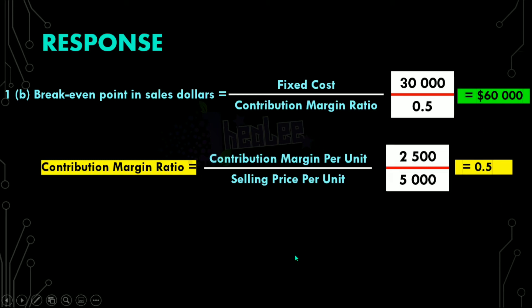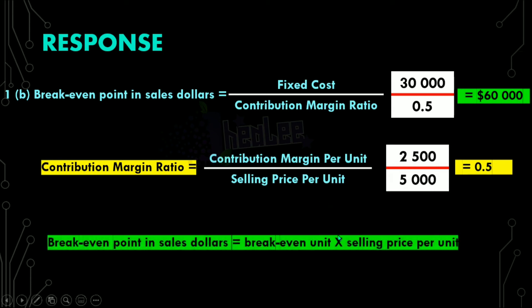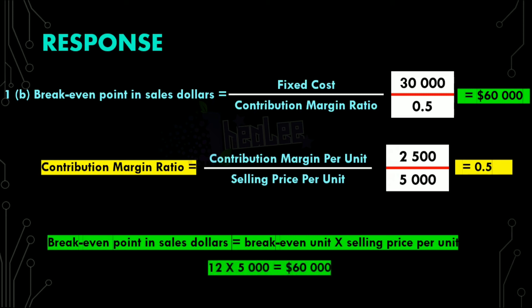There's another way to calculate break-even point in sales dollars, and that is simply break-even units multiplied by selling price per unit. Our break-even in units is 12, calculated in part A, and our selling price is $5,000. So when you multiply 12 units by the selling price of $5,000, you get your break-even point in sales dollars. Whichever method you want to use, go ahead — but bear in mind that some questions may ask you to calculate your contribution margin ratio, so you still need to know how to calculate that.